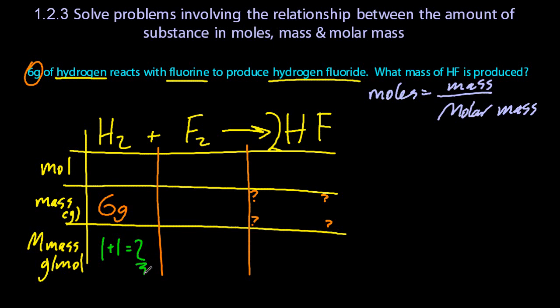And for fluorine, it's 19 and 19, so that's 38 grams per mole. So if I had 38 grams of fluorine, I'd have 1 mole. And for hydrogen fluoride, well, that's 1 and 19, and that's 20 grams per mole.